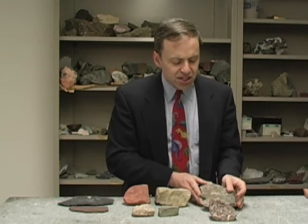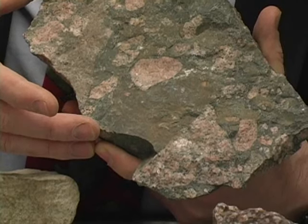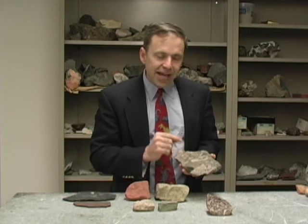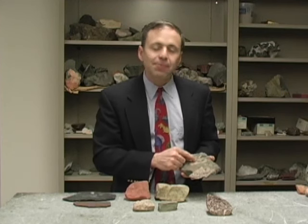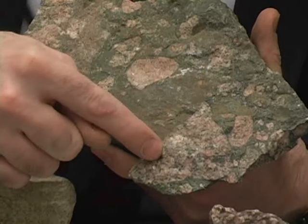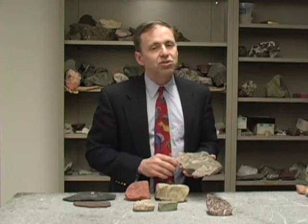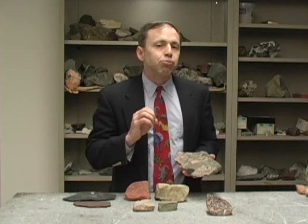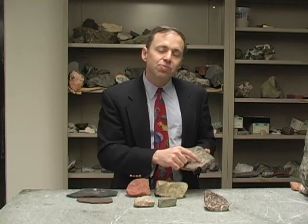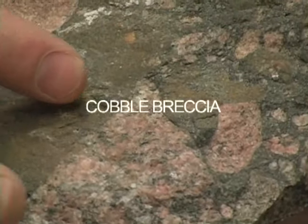Starting with these, this one has some very coarse grain — so this is a cobble conglomerate. To make it a conglomerate, the grains usually have to be round. If they are not round and they are angular, this is what is called a breccia. So a breccia is a coarse-grained rock with angular fragments in it. This would be a cobble breccia.